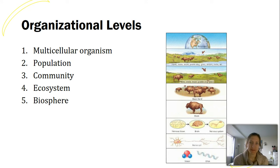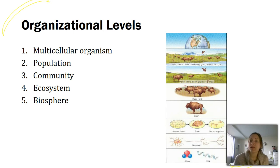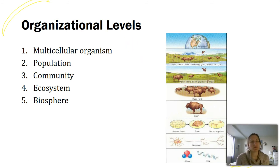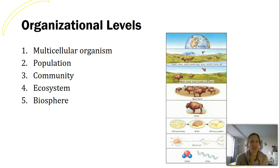We can't look at the whole world all at once, so biologists break up the world and those interactions into different organizational levels. Instead of just saying 'I'm a biologist,' someone might say 'I'm a population biologist' or 'an ecosystem biologist.' From smallest to largest, we have a multicellular organism, a population, a community, an ecosystem, and finally the biggest level — the biosphere.